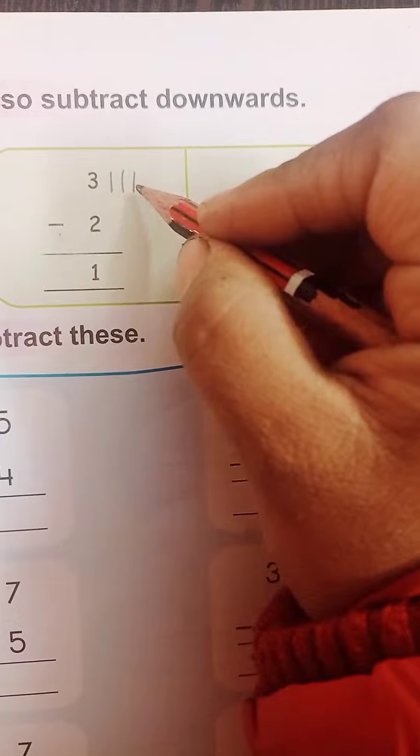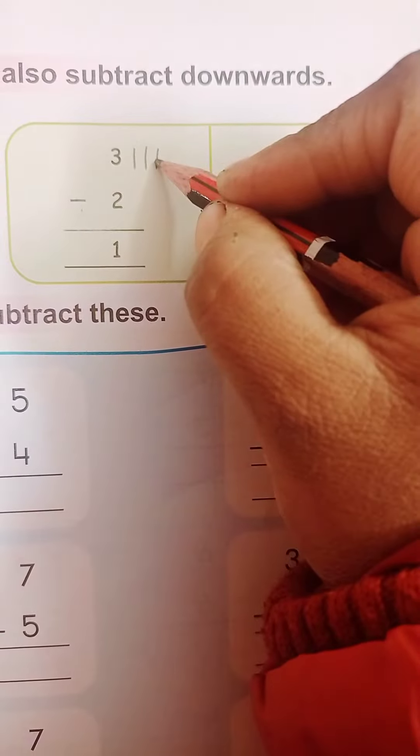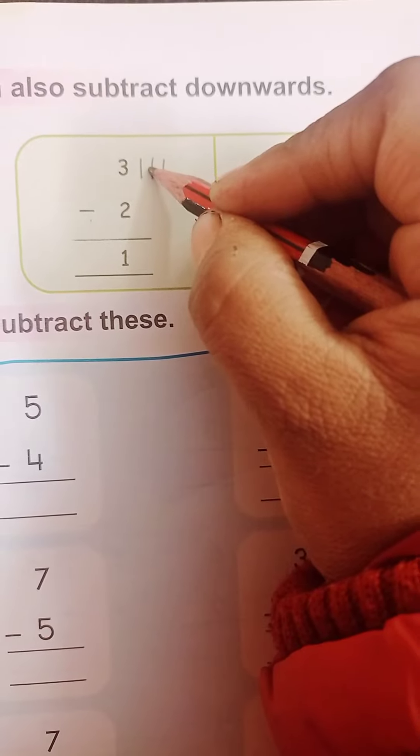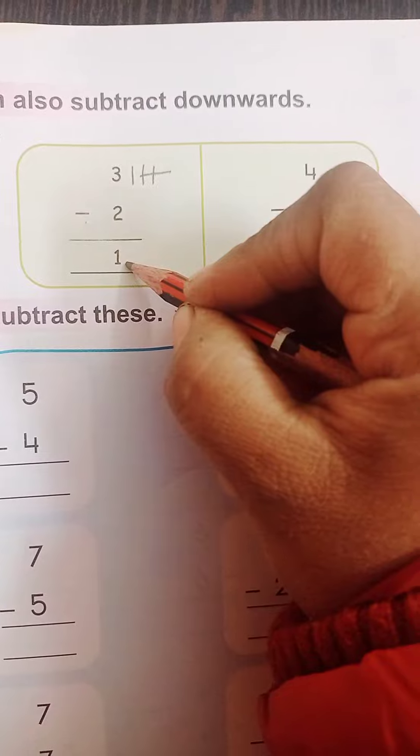So, here are 3 lines and here is number 2. Then, what we will do? We will cut 2 lines from this 3, okay? 1, 2. We will cut in this way. So, what is the answer? The answer is 1.